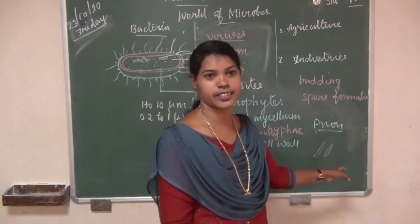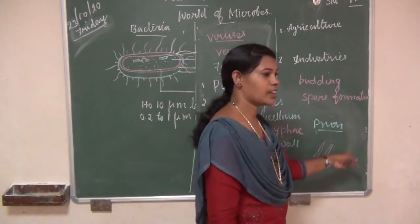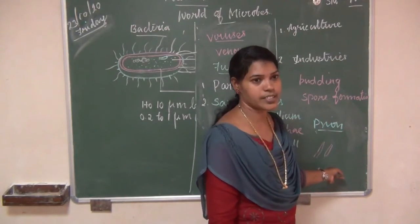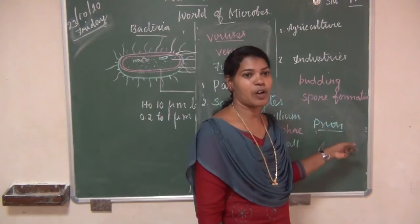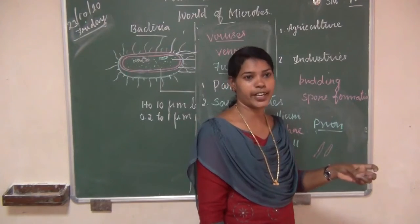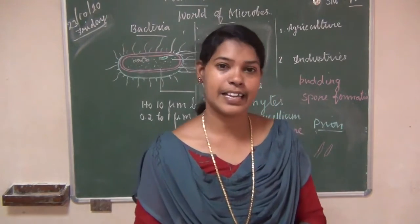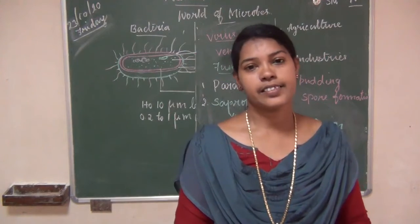To summarize: prions are small viral particles found in neurons. They do not have nucleic acid — only protein. They cause diseases in nervous tissue.